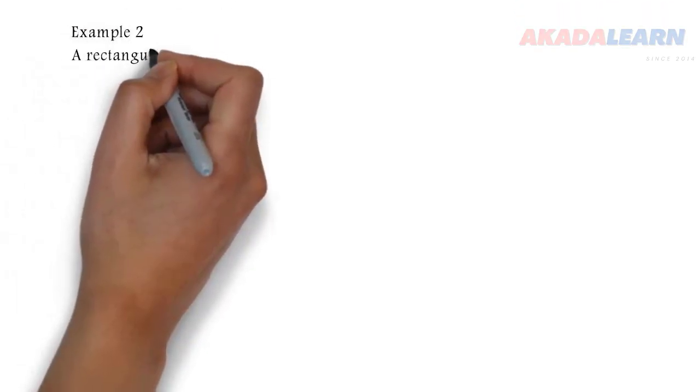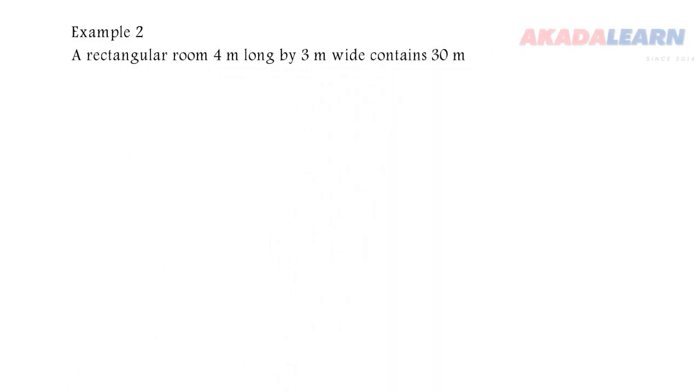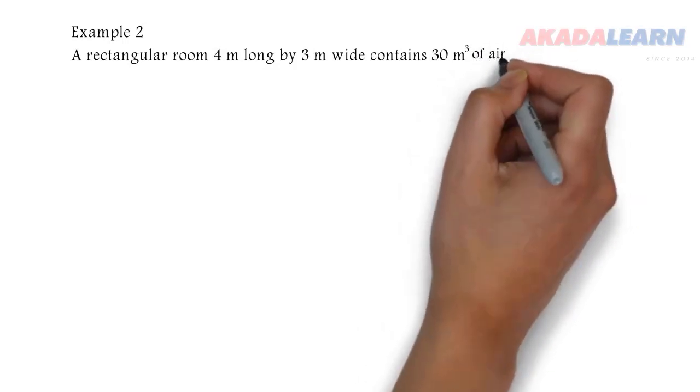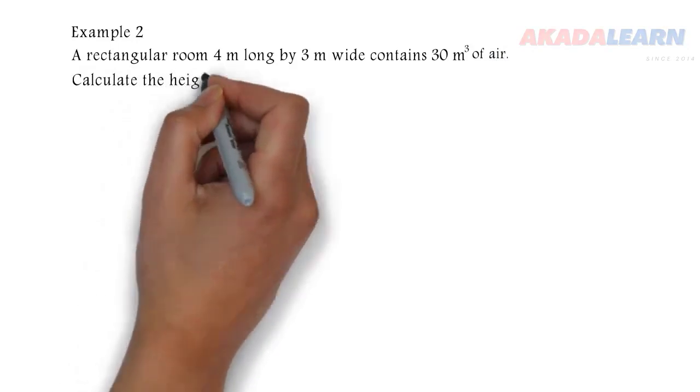Example 2: A rectangular room 4 m long by 3 m wide contains 30 m³ of air. We are asked to calculate the height of the room.